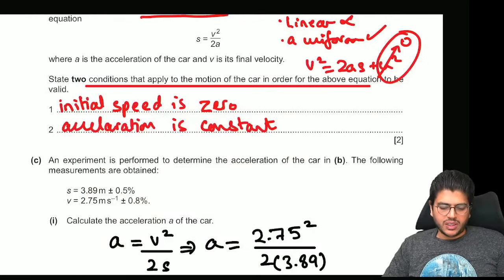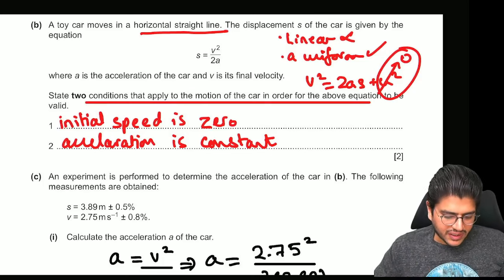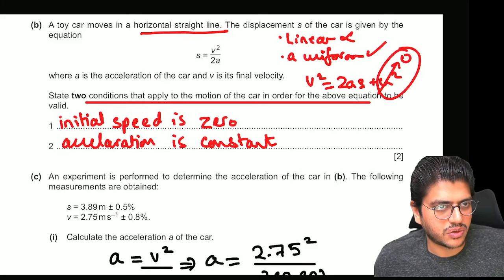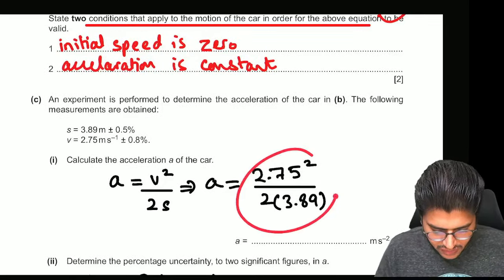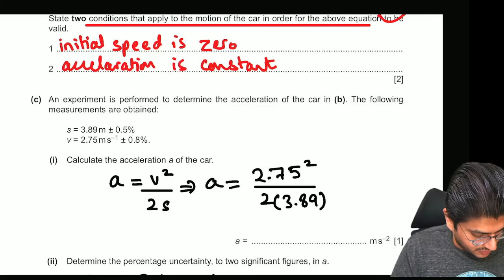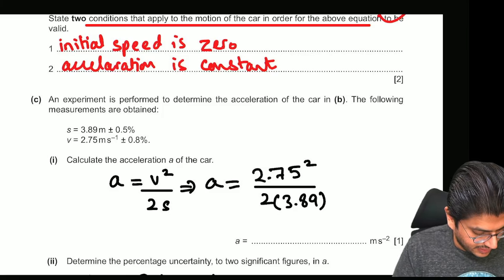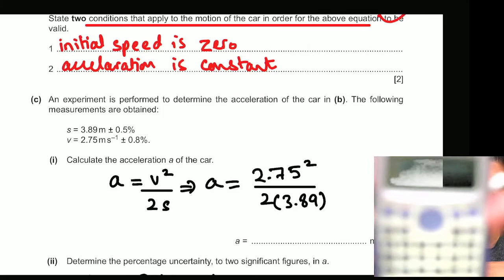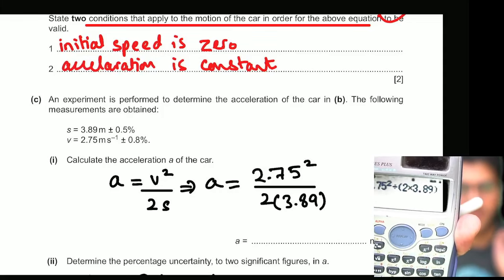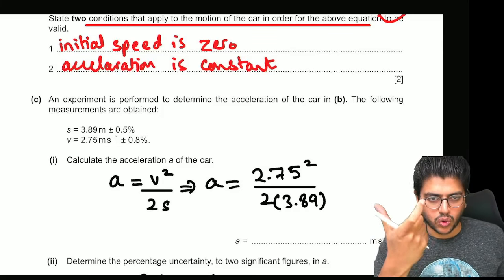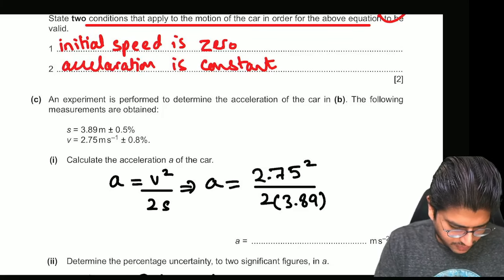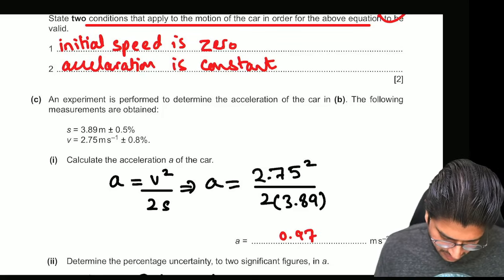Now an experiment is performed to find the acceleration of the car. You have to find the acceleration. So first you make acceleration the subject of this equation. So acceleration is going to be V square over 2S. And you're going to get 2.75 squared divided by 2 into 3.89. I'm not using the fraction mode. Therefore I've given it a bracket. If I don't give it a bracket, I'll get the wrong answer. So whatever is in your denominator, the whole thing has to come in a bracket. So the answer that I get from here is 0.97 meters per second square.